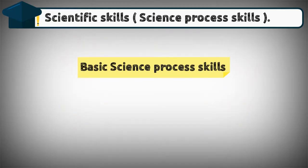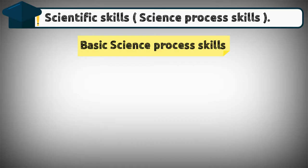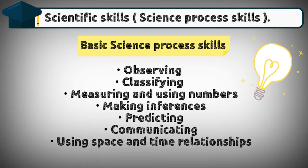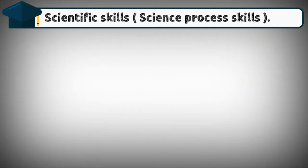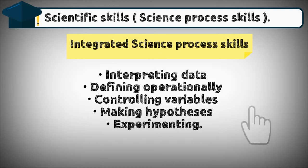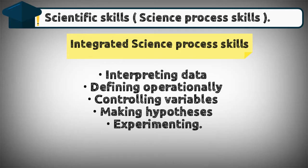Basic science process skills are divided into six parts: observing, classifying, measuring and using numbers, making inferences, predicting, communicating, and using space and time relationships. Meanwhile, integrated science process skills are divided into five: interpreting data, defining operationally, controlling variables, making hypotheses, and experimenting.